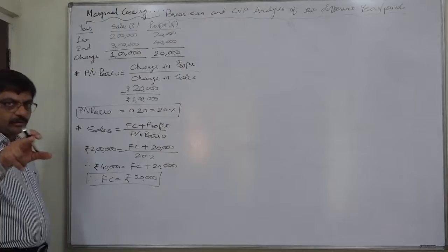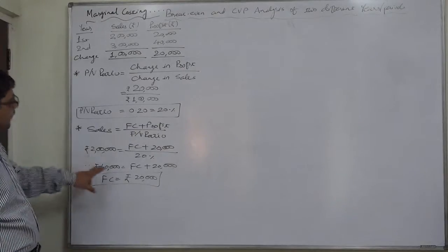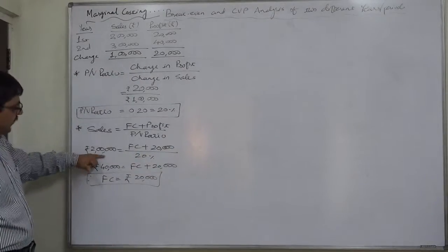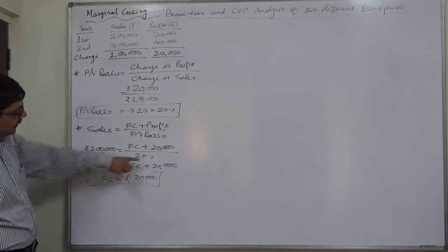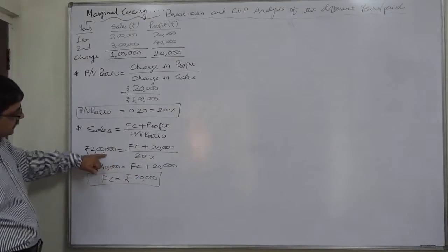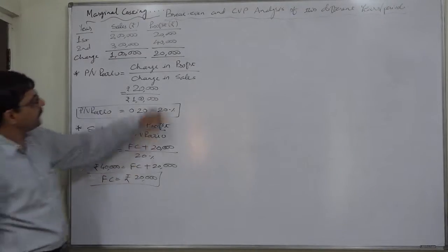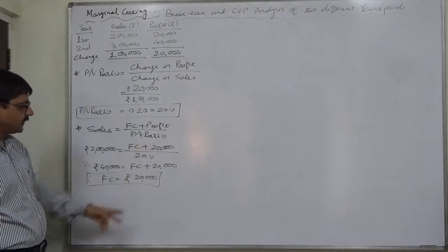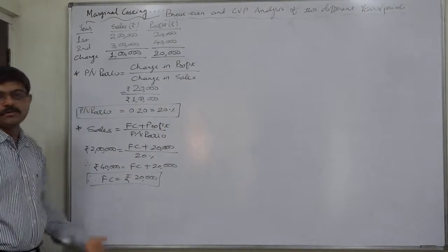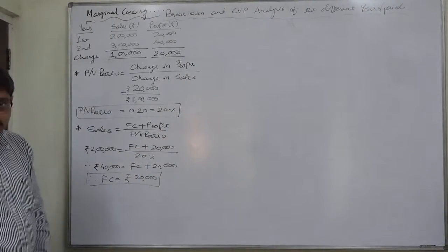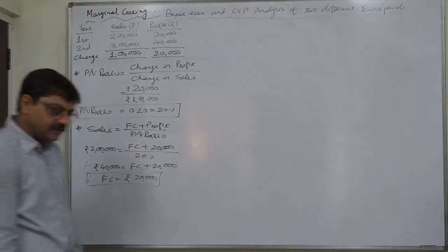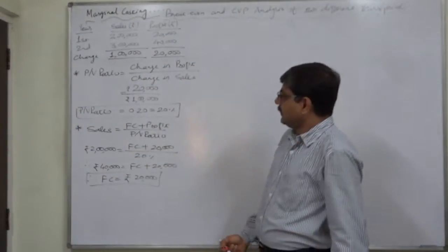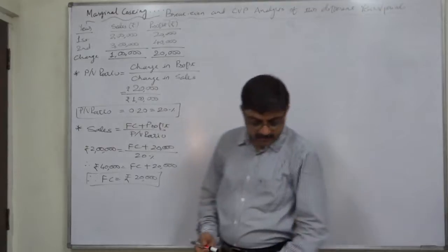We can verify by taking sales and profit of the second year. Rs. 3,00,000 multiplied by 20% gives contribution of Rs. 60,000, and profit is Rs. 40,000. So fixed cost again comes to Rs. 20,000. The fixed cost is equal in both years. Now we can calculate everything.